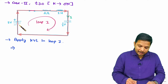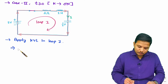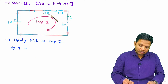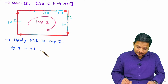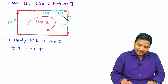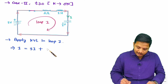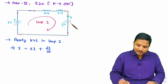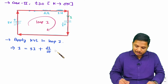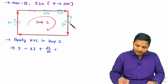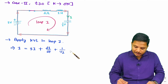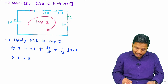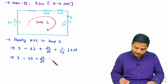In this loop we have the battery going from minus to plus, so we write plus one volt. This equals the voltage drop across the three-ohm resistor, which is 3i, plus the voltage across the inductor L·di/dt, where L equals one henry, plus the voltage across the capacitor, which is (1/C)∫i dt, where C equals one-half. Simplifying: 1 = 3i + di/dt + 2∫i dt.